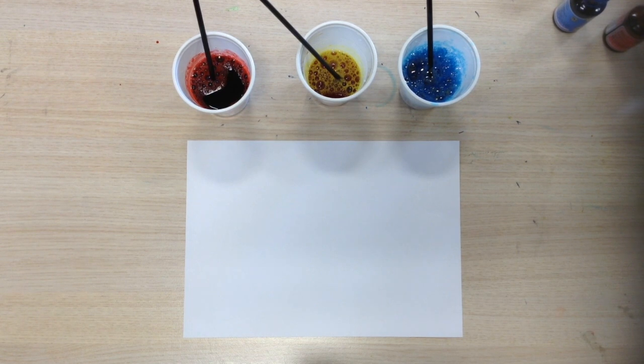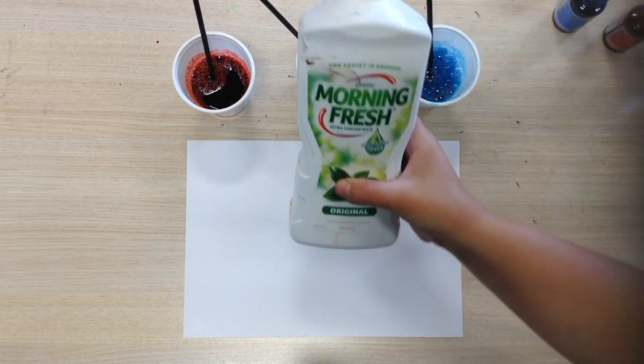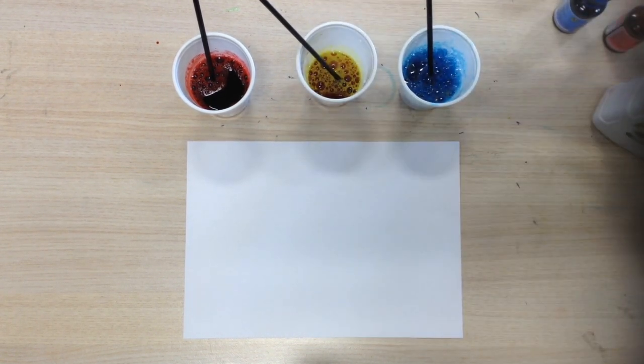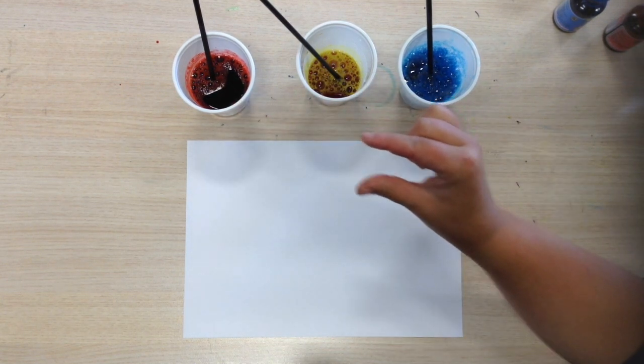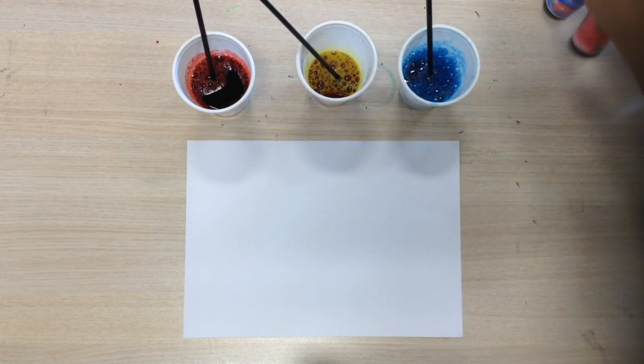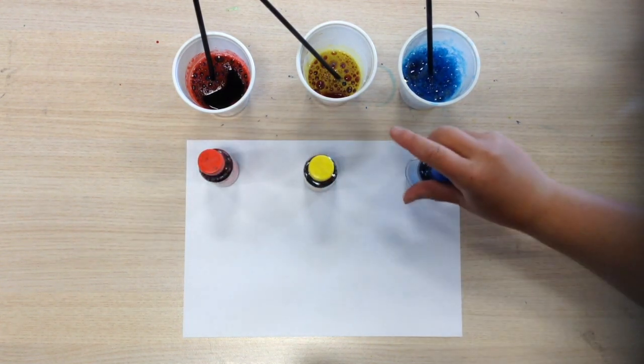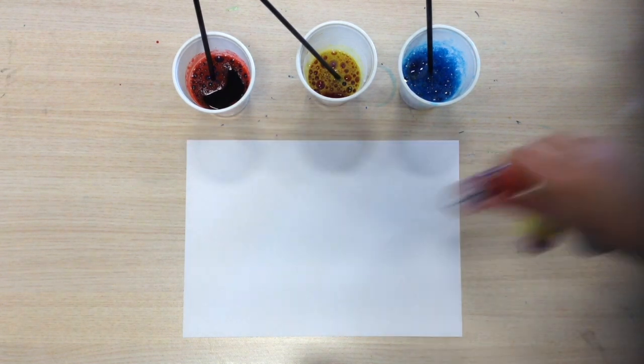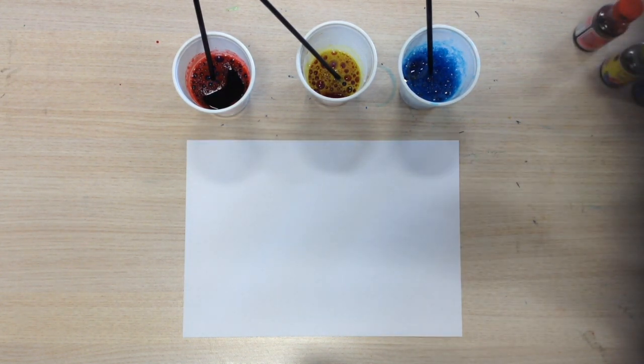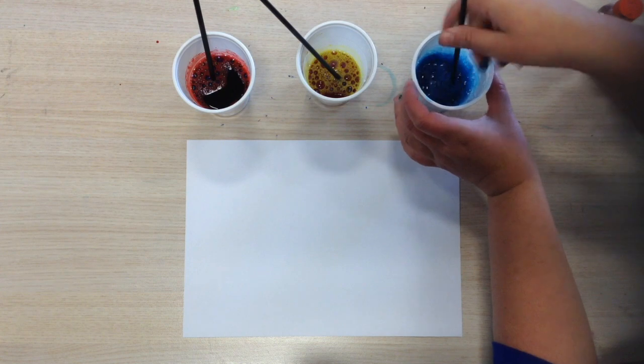Okay, step number one. I've put some washing liquid, I'm using Morning Fresh, into each of my cups. I've added just a little bit of water before adding in red, yellow and blue food dye. Don't put too much water. Now, I've given them a little bit of a stir.